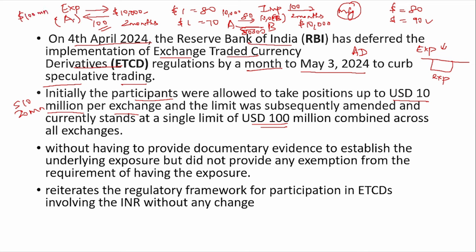Up to $100 million, you don't have to provide documentary evidence to the authorized dealer, but it is mandatory that you actually have the underlying exposure. If the exposure is above $100 million, then you must provide the evidence to the authorized dealer. Previously it was $10 million per exchange; later it was updated to $100 million combined across all exchanges.